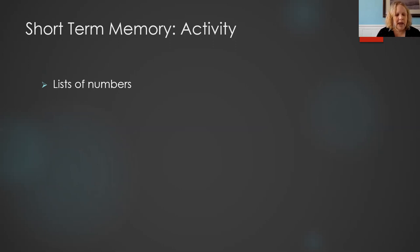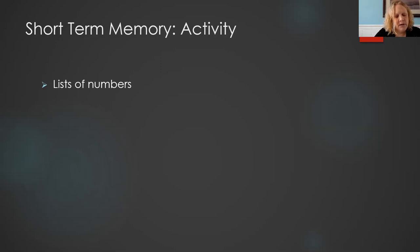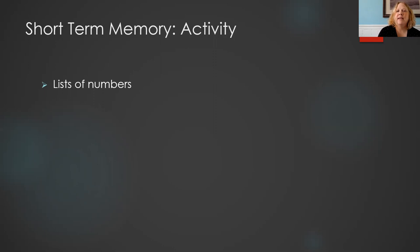We're going to do an activity together. I'm going to read off a list of numbers. Wait until I'm finished and I say 'go,' then write down as many numbers in order as you can remember: 4, 9, 0, 2, 8, 4, 1, 2, 5, 4, 3, 7. Go. This test is known as the digit span test, testing short-term memory. We typically find adults can hold between five and nine items in a series, with the average being about seven.